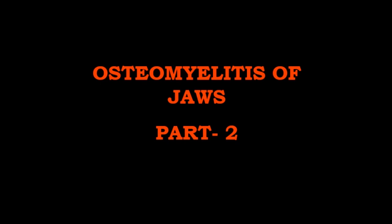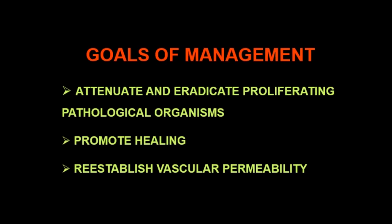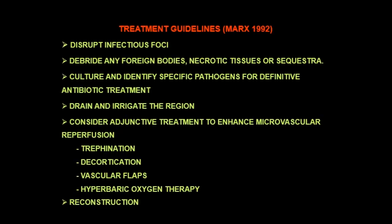Welcome back to OMFS lecture series. In this lecture we shall discuss the management of jaw osteomyelitis. There are certain goals to achieve: to attenuate and eradicate proliferating pathological organisms, to promote healing, and to re-establish the vascular permeability — since vascular supply to the infected bone is compromised, it is important to re-establish blood supply to the bone. The Marx protocol for treatment includes disrupting the infectious foci, debridement, culture and identification of specific pathogens, drainage and irrigation, and adjunctive treatments like trephination and decortication to enable microvascular reperfusion and reconstruction. These are the treatment guidelines given by Marx in 1992.